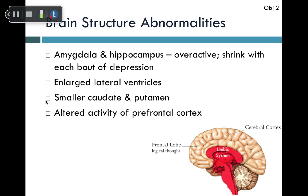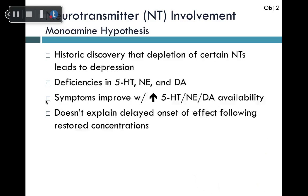Regarding etiology and pathophysiology, brain structural abnormalities have been identified in MDD. The amygdala and hippocampus are overactive but shrink with each depressive episode. Lateral ventricles are enlarged, corresponding to reduced gray matter, impairing brain processing. There is a smaller caudate and putamen, and altered activity of the prefrontal cortex — significantly involved in logical thought, decision-making, and executive functioning — resulting in reduced ability to plan and decide when depressed.